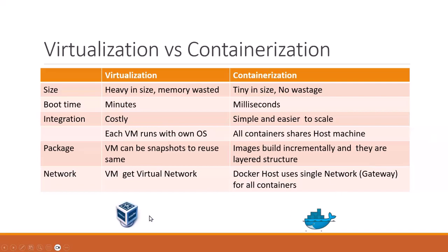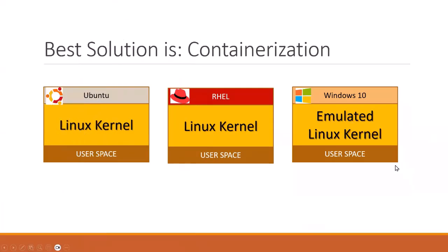These are the differences between virtualization and containerization — you can see the icons: VirtualBox and Docker. How this solution solves 'it works on my machine': Docker containers can run on Linux kernels. The Linux kernel can be any Linux — Ubuntu, Red Hat — or Windows 10 and above, which supports an emulated Linux kernel. This makes the space where you can run Docker containerization.